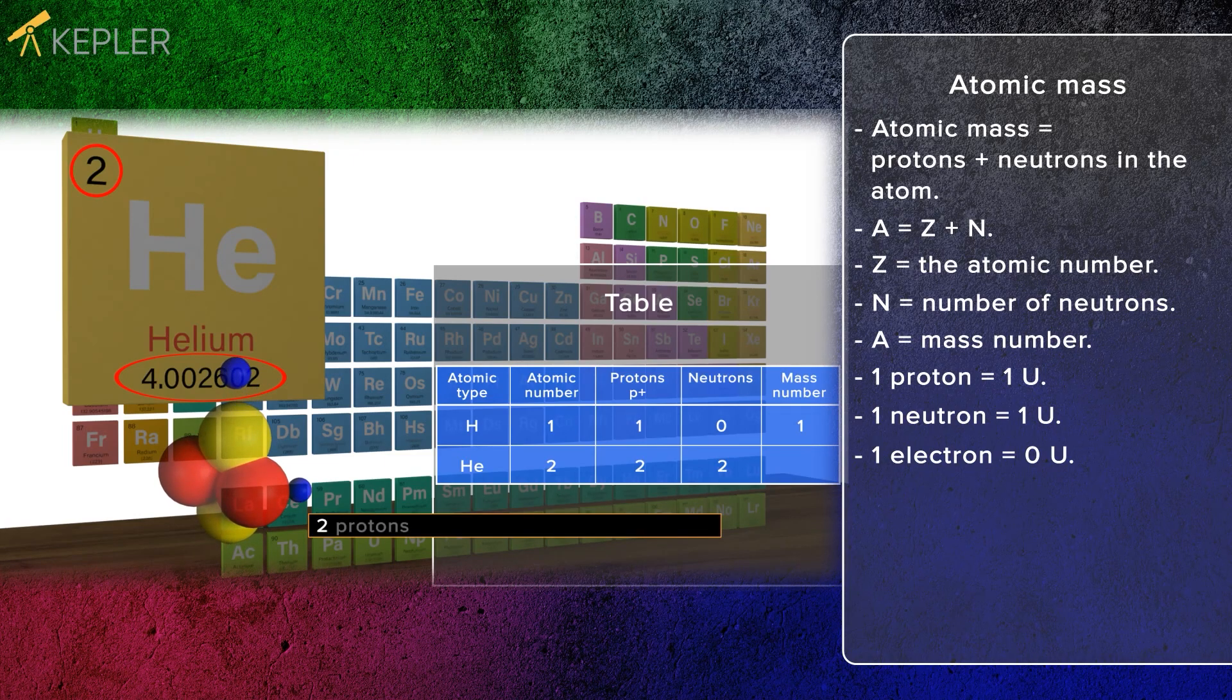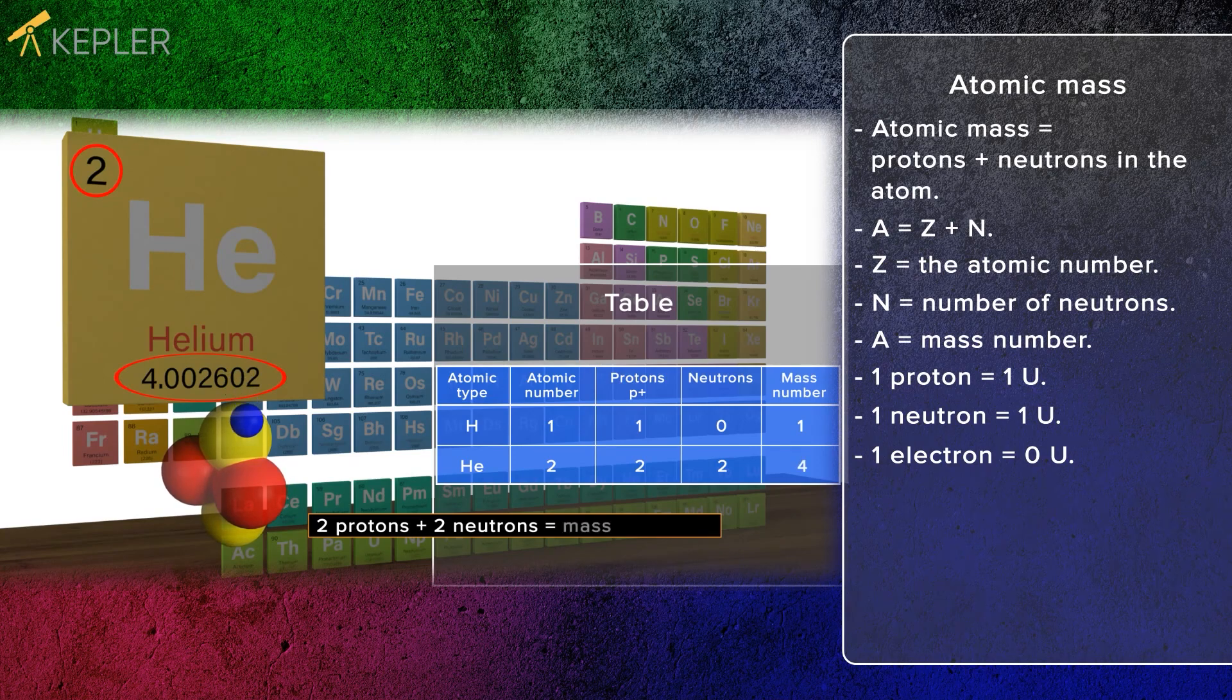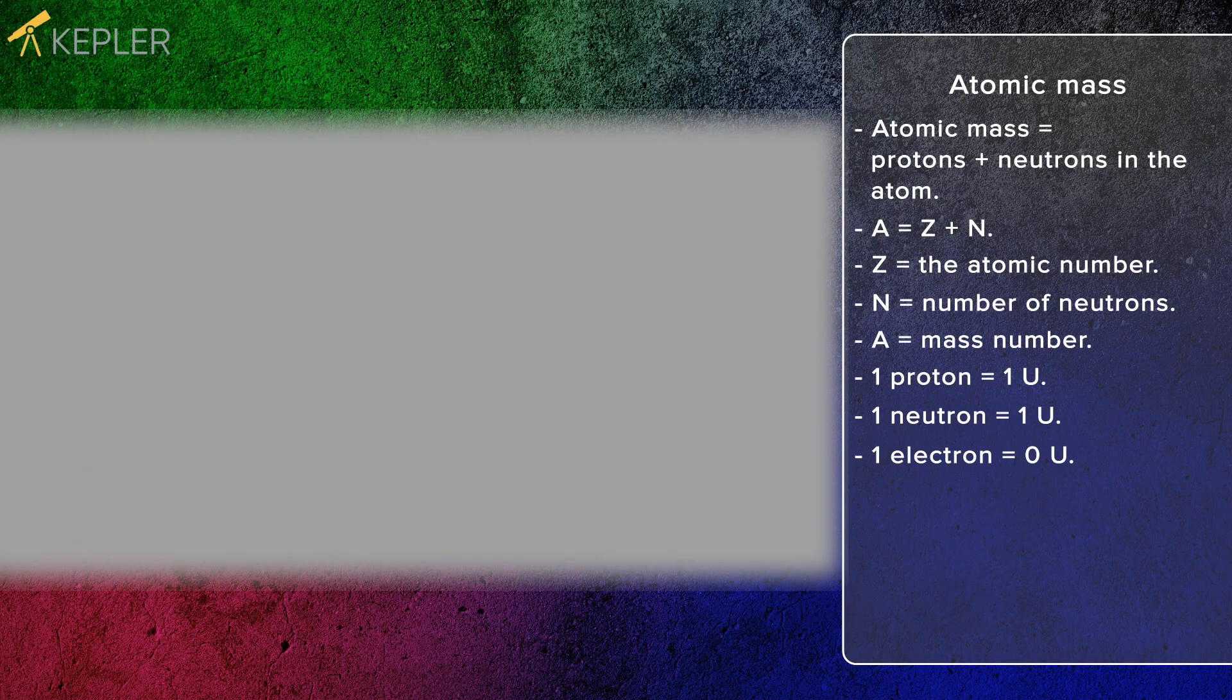Mass number equals number of protons plus number of neutrons. Therefore, the mass number for helium is 4.